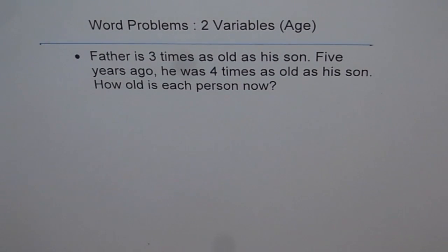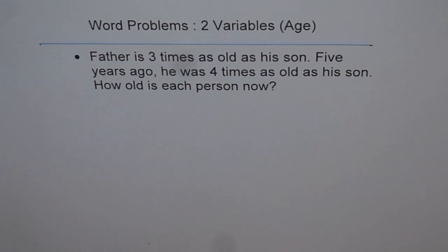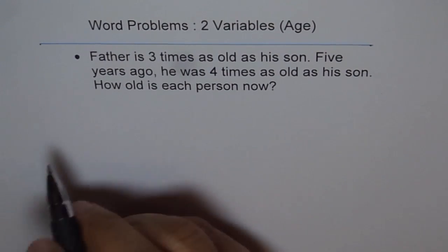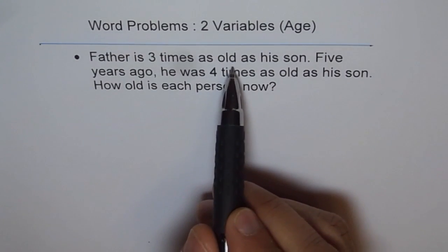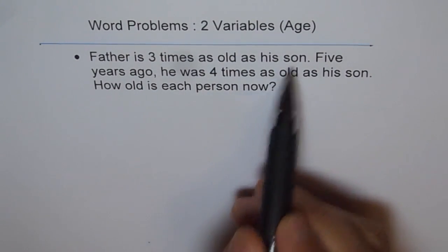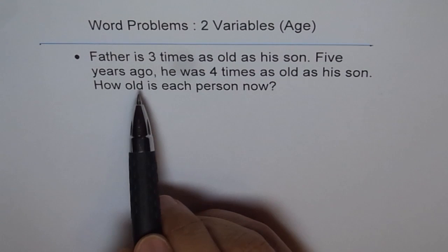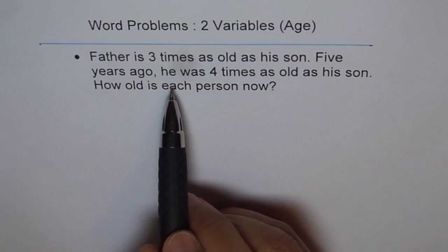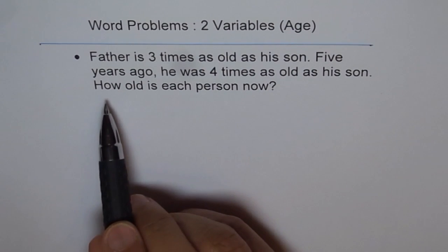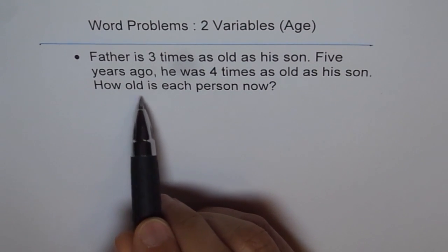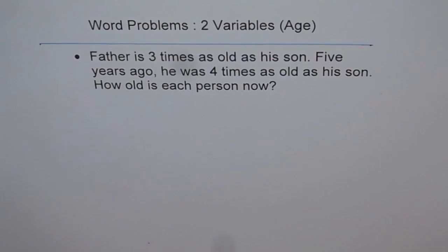Here is a word problem in which we have age and we have two variables. Let's see how to solve such questions. The question is: father is three times as old as his son. Five years ago, he was four times as old as his son. How old is each person now?